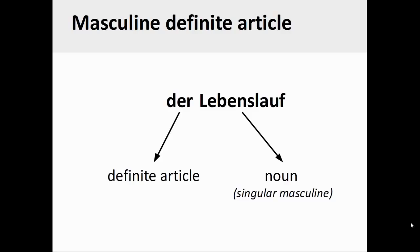Let's take a look at some examples. The German noun Lebenslauf, or resume, is a singular masculine noun. Therefore, its definite article will always be der.